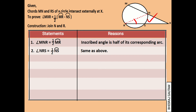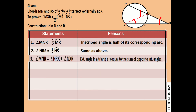Also, in triangle NRX, angle MNR is the exterior angle, which is equal to the sum of the opposite interior angles of the triangle. So it can be written that angle MNR is equal to angle NRX plus angle NXR.